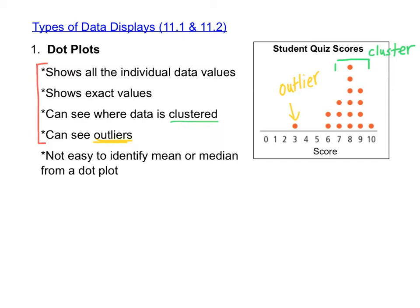The best thing about the dot plot is we can see all of the individual data values, but the downfall of a dot plot is that it's not easy to identify the mean or the median just by looking at the dot plot. If you wanted to find the mean or the median, you would need to do a long calculation by hand, or you would need to input all of the data into a graphing calculator or Desmos and calculate it that way.